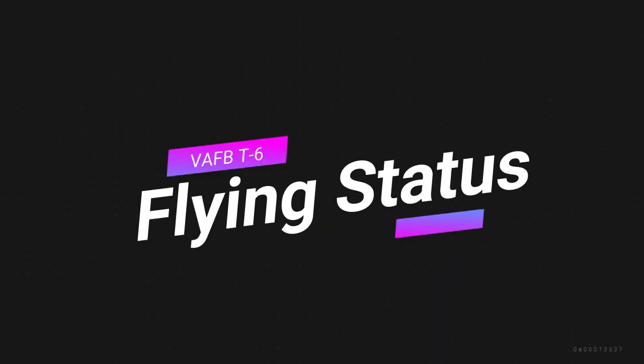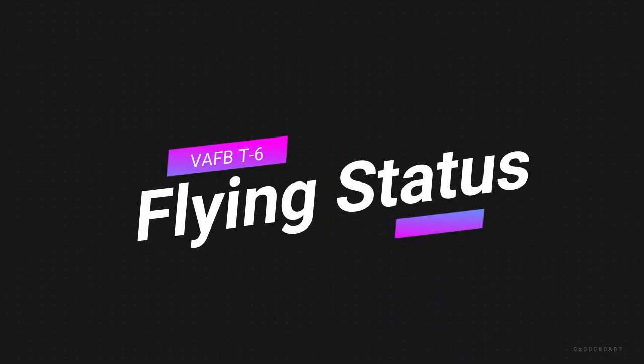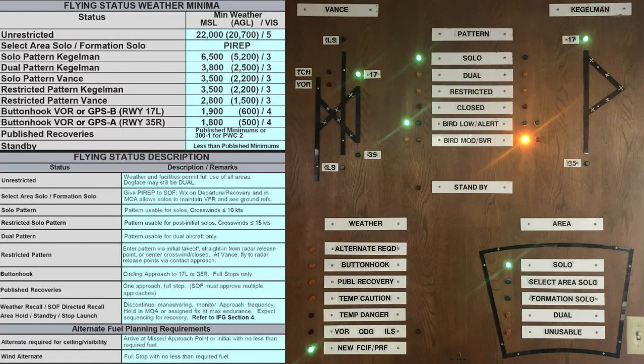In this lesson, we look at flying statuses for the T-6 at Vance Air Force Base. The flying status is primarily based on winds, cloud coverage and ceiling, and visibility, but can also be based on other factors like ATC facility outages, RSU controller availability, and the flying schedule.